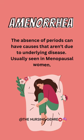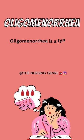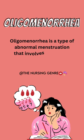5. Oligomenorrhea — infrequent menstruation. The normal cycle is 28 days, but with oligomenorrhea the cycle is more than 28 days, typically 35 to 40 days.